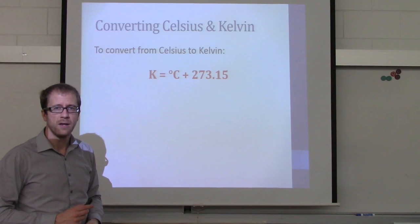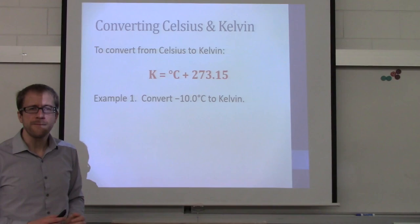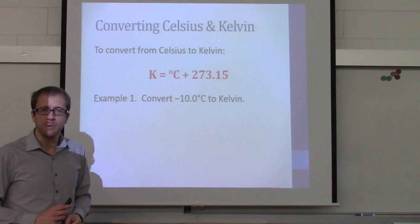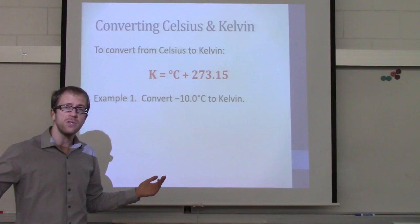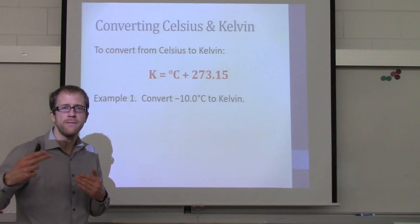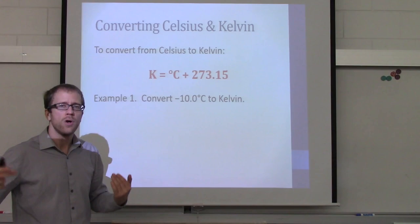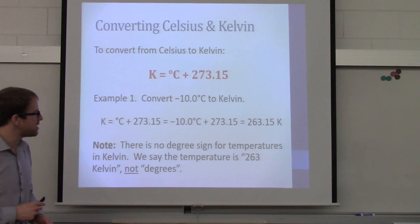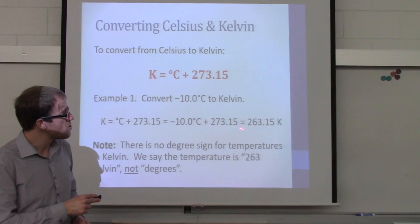Let's do a quick example — converting minus 10 degrees Celsius to Kelvin. We're going to add 273.15 — not subtract — because you cannot have a negative Kelvin. The scale is completely absolute. So negative 10 degrees Celsius plus 273.15 gives us 263.15 Kelvin.